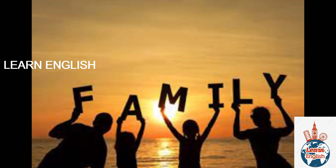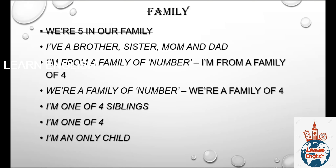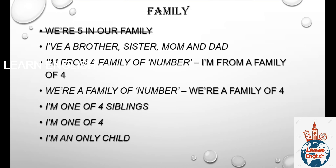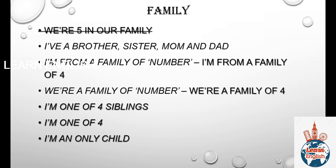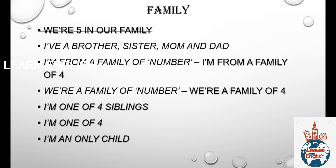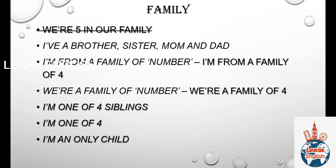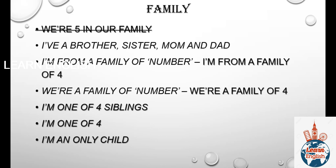For family, we usually say 'we are five in our family' — but this is not quite right. Instead, you can say: I have a brother, a sister, mom and dad. Or you can use: I am from a family of four, we are a family of four, I am one of four siblings. If you are a single child, you can say: I am an only child.